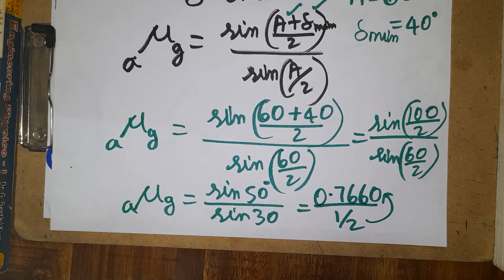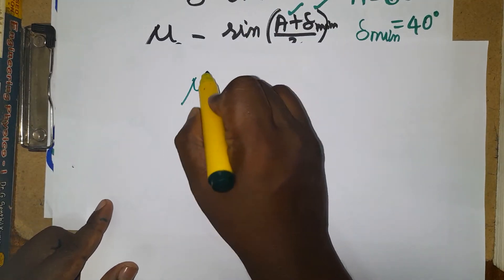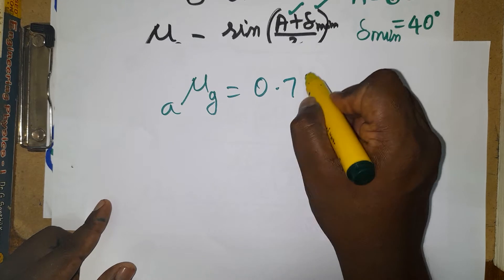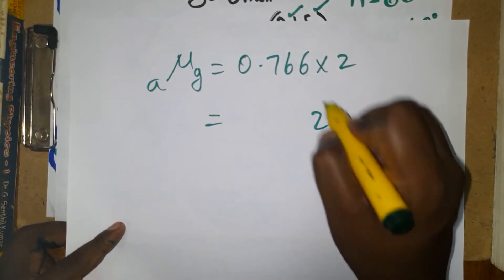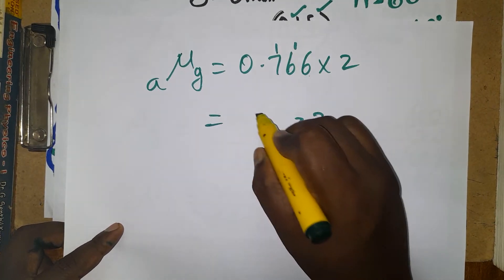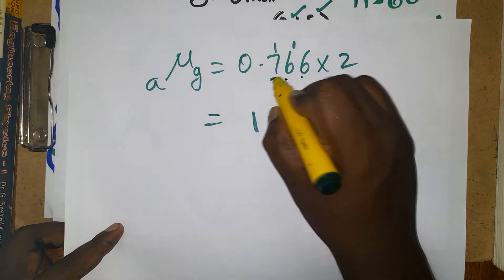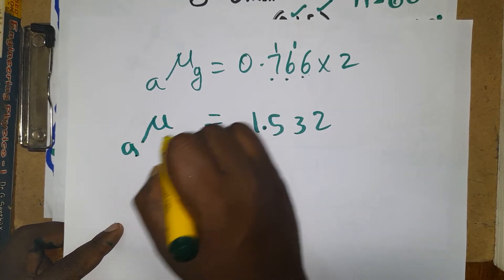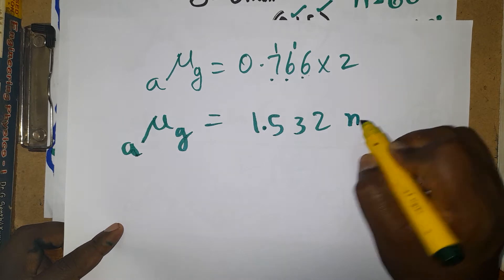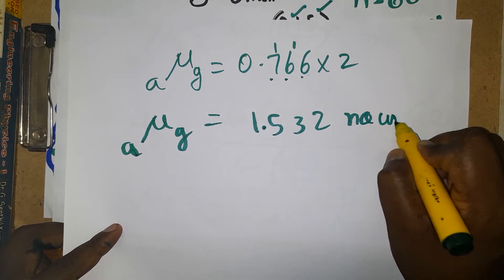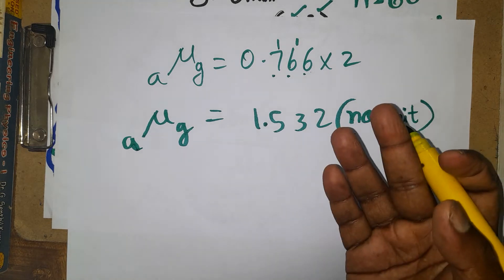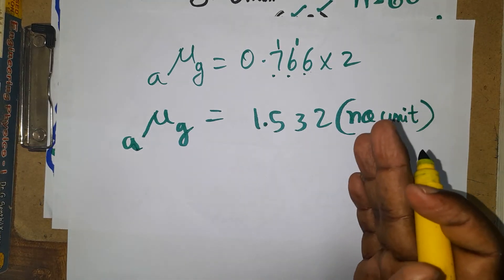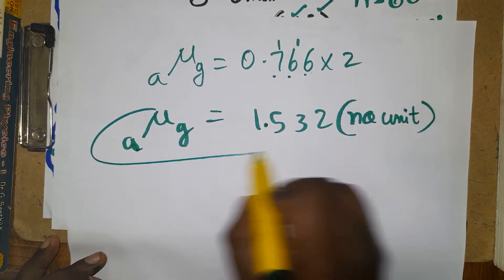Since the denominator is 0.5 (i.e., 1/2), it goes to the numerator as a multiplication by 2. So μ(air to glass) = 0.766 × 2 = 1.532. The refractive index of air to glass is 1.532 — no unit. This is close to 1.5, confirming the answer is correct.